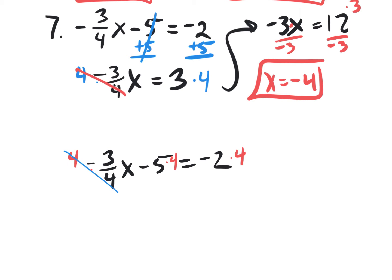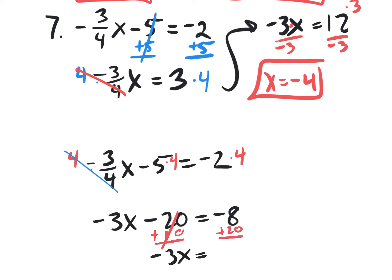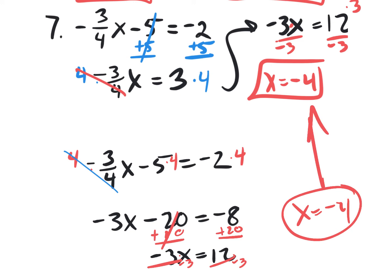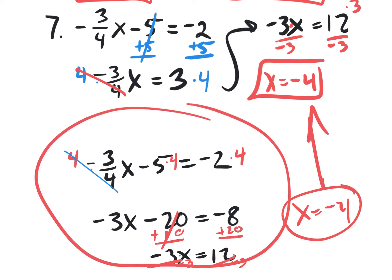I'm showing you that you could get rid of any fraction by multiplying everything by the denominator of that fraction. Then you continue solving: add 20, add 20, you'd get negative 3x equals 12. Divide both sides by negative 3, you get x equals negative 4. Same answer as before. The original way is the best — get rid of the minus 5 first by going plus 5, plus 5, then multiply both sides by 4 to get rid of the fraction.